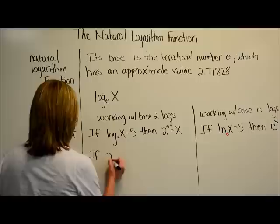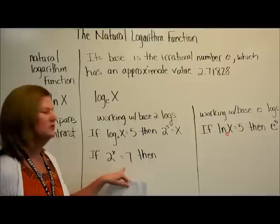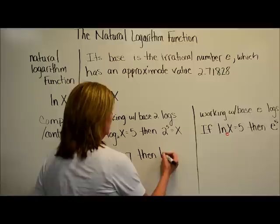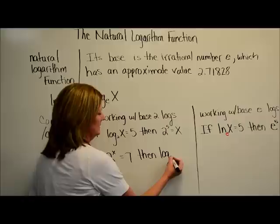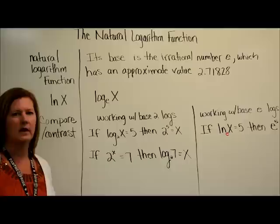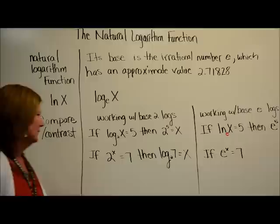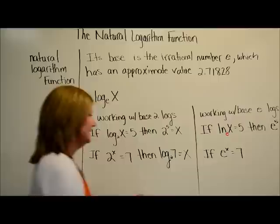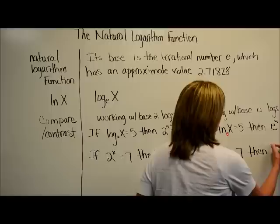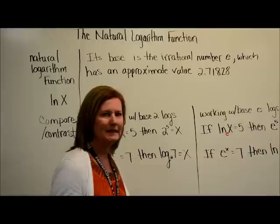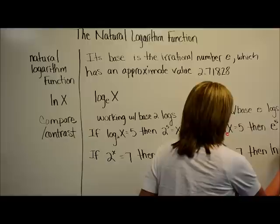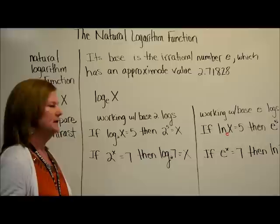If 2 to the x equals 7, I'm going to go into logarithmic form, because I'm in exponential form. A log is just asking about an exponent, so log base 2 of 7 equals x. Now comparing: if E to the x equals 7 — instead of a 2 I have an E — then ln of 7 equals x. I'm doing it the same way.